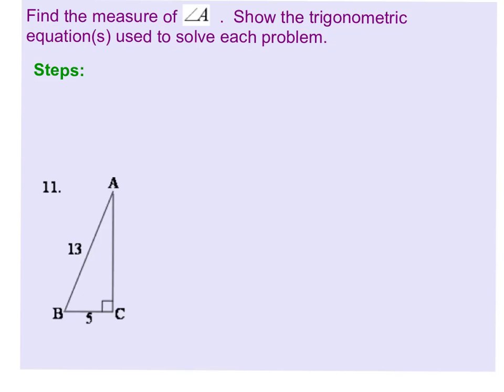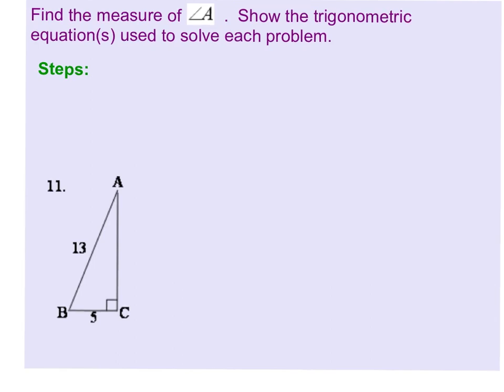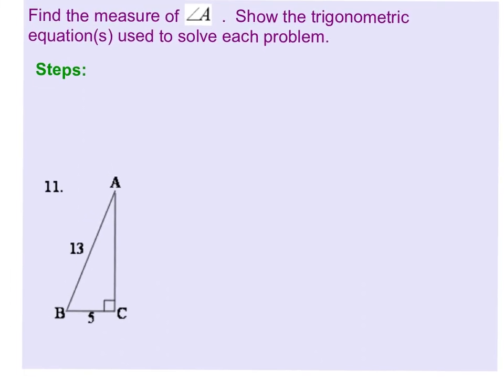So now that you've learned what the inverse functions of sine, cosine, and tangent are, we are going to use those to set up trigonometric equations in order to solve for problems like 11 through 19. The directions tell us that we're going to find the measure of angle A. You're going to show the trig equation used to solve each problem, and there's a spot right here that says what the steps would be.